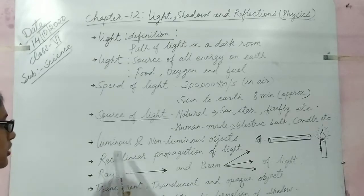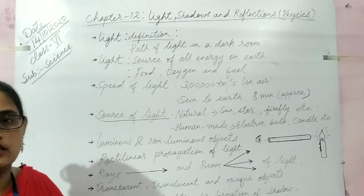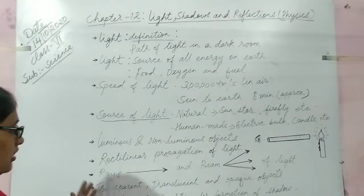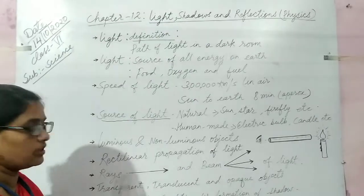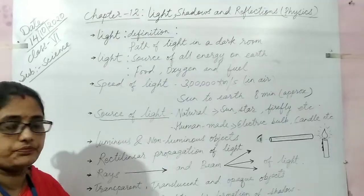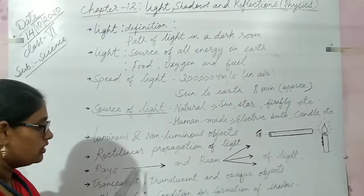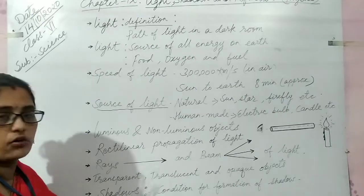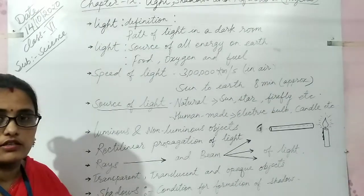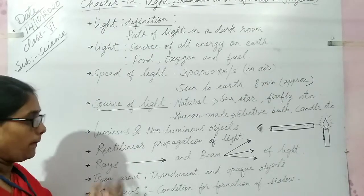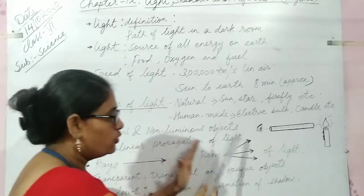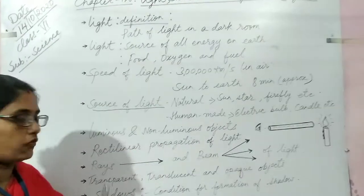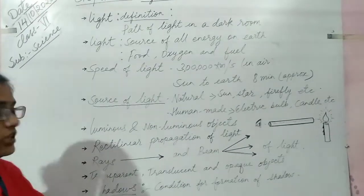This property of light is known as rectilinear propagation of light. Now, rays and beam — as you can see in the picture, a straight line with an arrow ahead is known as a ray. A group of rays is known as a beam of light.